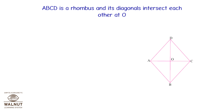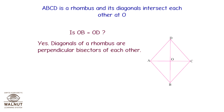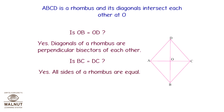ABCD is a rhombus and its diagonals intersect at O. Is OB equal to OD? Yes — diagonals of a rhombus are perpendicular bisectors of each other. Is BC equal to DC? Yes — all sides of a rhombus are equal. Is triangle BOC congruent to triangle DOC? Yes, by the SSS test.